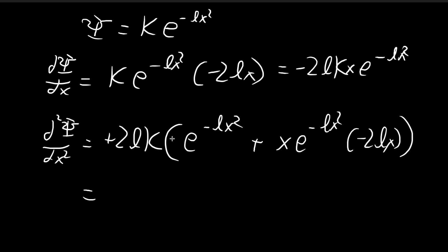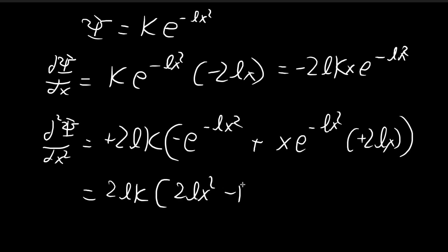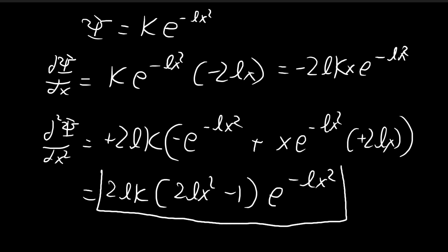Putting the negative sign on the inside and cleaning up, we get 2lx squared minus 1, times e to the power of negative lx squared. This is the second derivative.